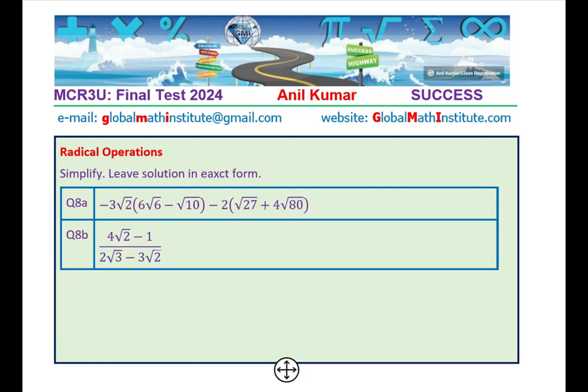Let's move on to the next question, which is question number 8. Before we get into the roots of quadratic equations, a good idea to revisit the radical operations. We have two questions based on radical operations in this case. I'd like you to actually pause the video, answer these questions as we move along. That will be good for you and then from the playlist you can check the solutions. -3√2(6√6 - √10) is the first term minus 2(√27 + 4√80) is the second term. Part B is more on rationalization. You need to simplify, leave the solution in the exact form. It really means for 8B, rationalize the expression, write down your answer.